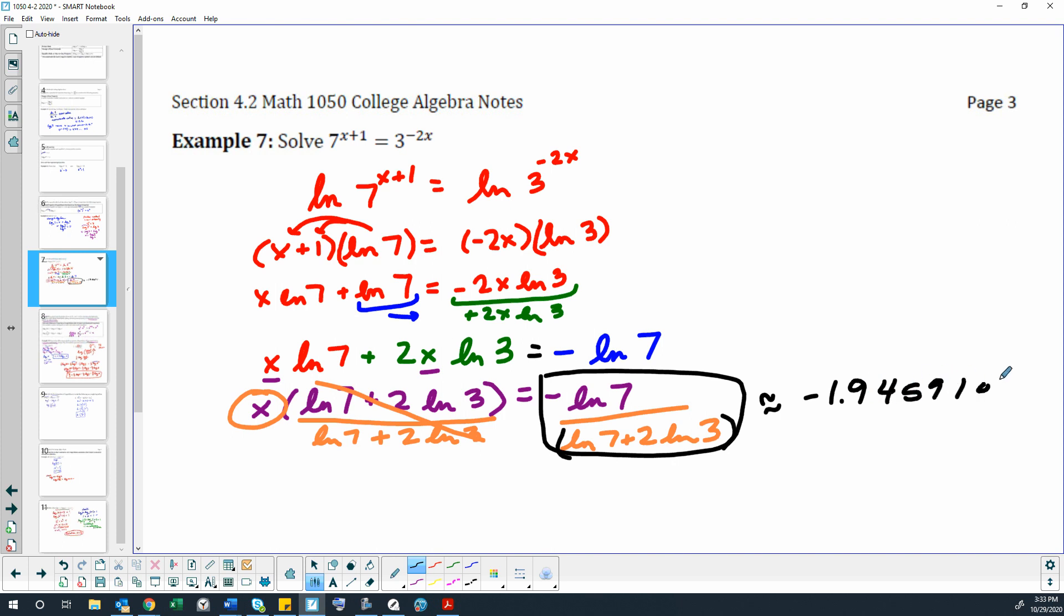But we have to actually add that to the other number before we can divide it. So that's why we couldn't just divide it and simplify it earlier. So now we're going to add that to 2 times the natural log of 3. So that would be adding that to 2.19722, blah blah blah.